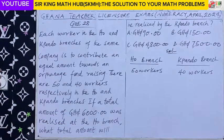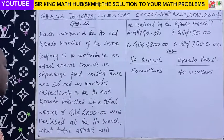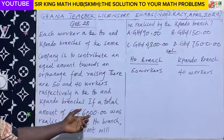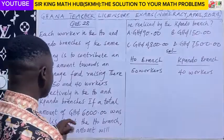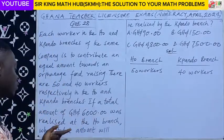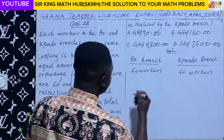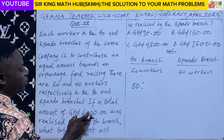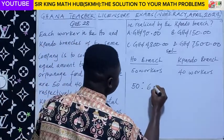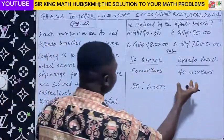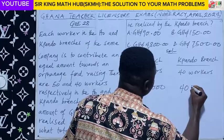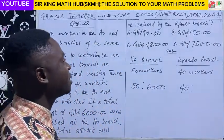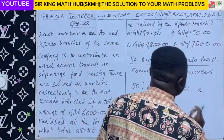Now, if a total amount of 6,000 Ghanaian cedis was realized at the WHO branch, what total amount will be realized by the Pando branch? So we can set up ratio and proportion here. We are told that 6,000 cedis was the total amount realized in the WHO branch, with 50 workers. For the Pando branch, there are 40 workers. Let's represent the total amount realized at the Pando branch with a variable — I'm representing the total amount as A.